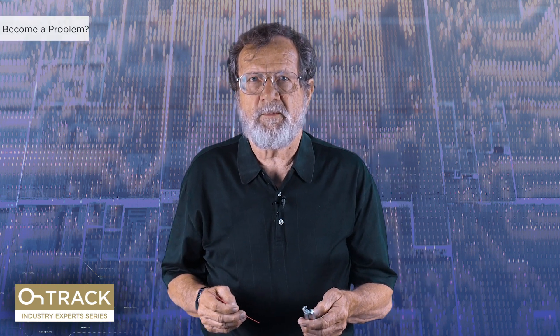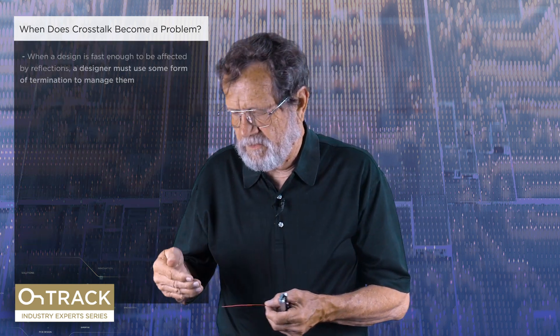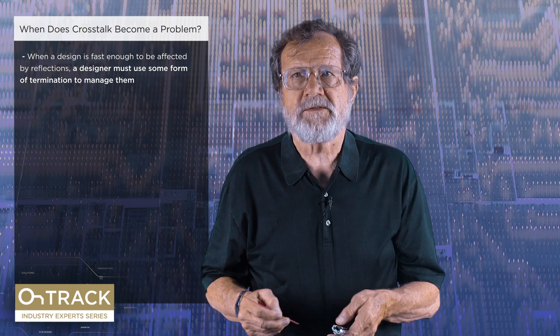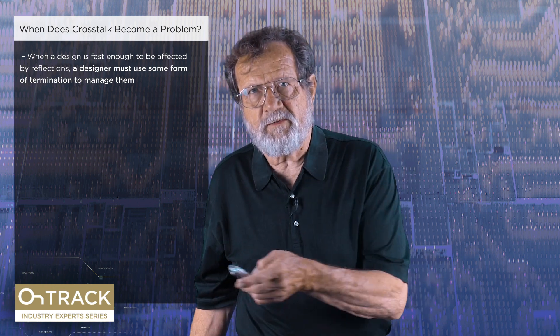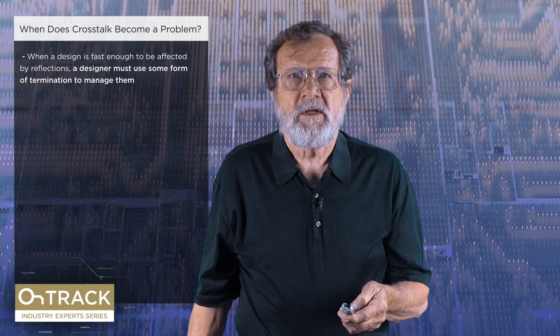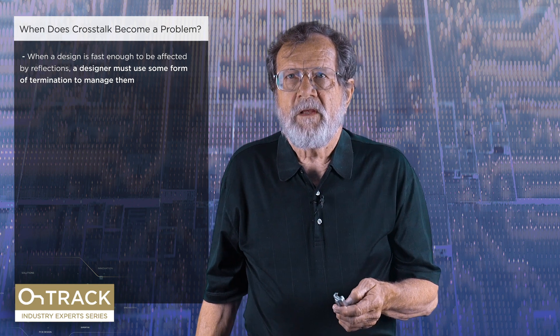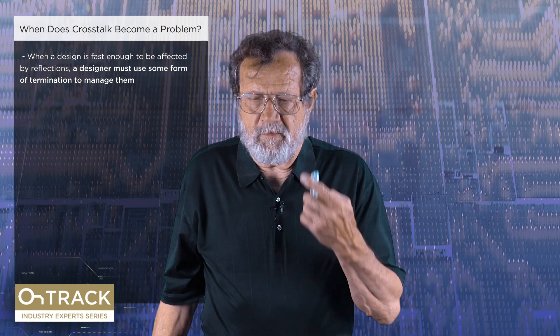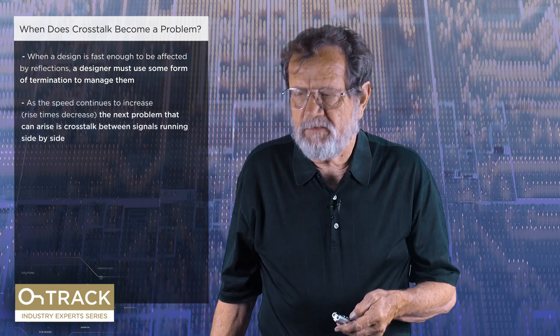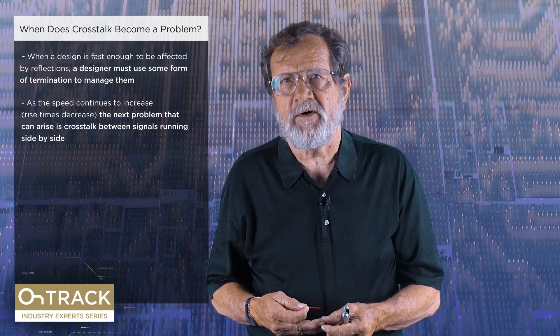The second thing you'll encounter is crosstalk. We're first going to control those impedance changes — those reflections — with terminators and by careful management of trace widths as we do routing. As we keep going up the speed curve, we'll start to see crosstalk, especially when you route very dense boards. Signals running side by side in the same layer are the primary thing we worry about in printed circuit boards.